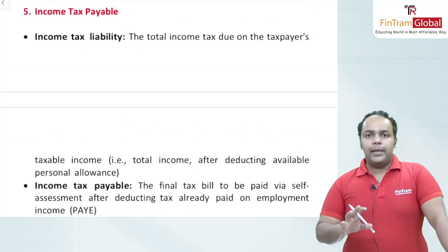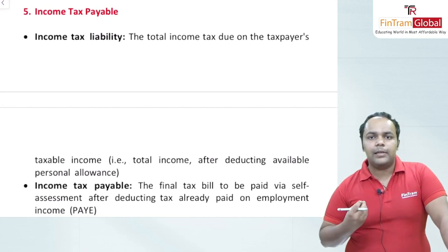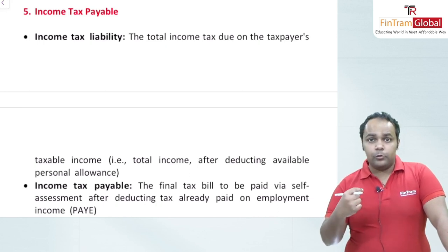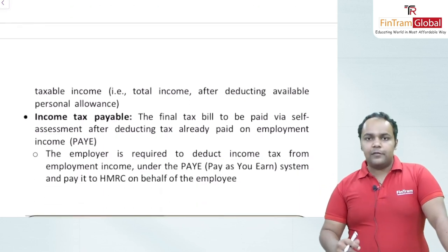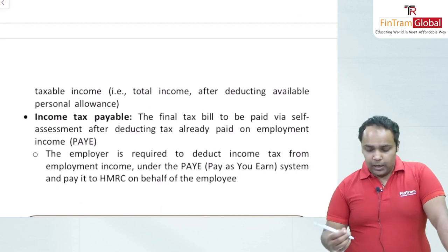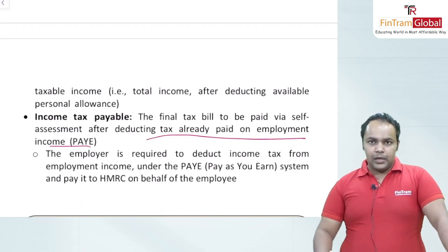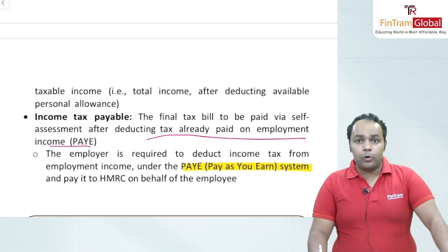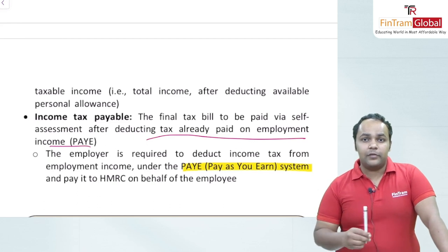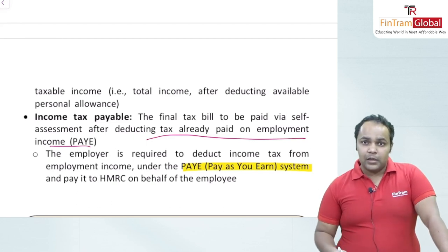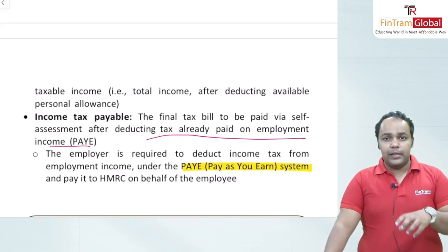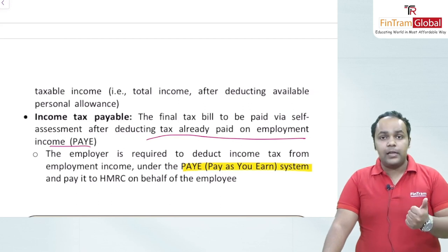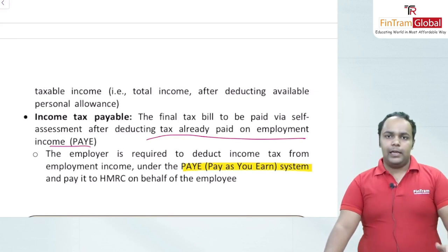Income tax payable may be different from income tax liability. Income tax liability is what the taxpayer is due to pay to HMRC after computation. Income tax payable is the final tax paid directly, after deducting any tax already paid through the Pay As You Earn (PAYE) system, where employers deduct taxes on behalf of employees and submit to HMRC. Only the remaining taxes are paid by the taxpayer at year end.